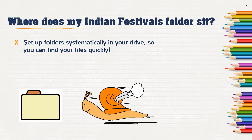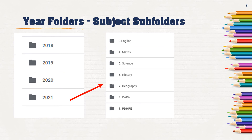Where does my Indian festivals folder actually sit? It's really important to set up folders systematically in your drive so that you can actually find your files quickly. You have to take a moment to set up a few folders, but once you've done that, it makes life much easier to find all your homework assignments. A really common way to do this is to go into your drive and set up a folder for the year — say a 2021 folder — and everything you do in 2021 will sit within that folder. Then underneath 2021, when you click inside it, you'll find a whole lot of subject folders that you can set up for all the subjects you're doing for school or university.